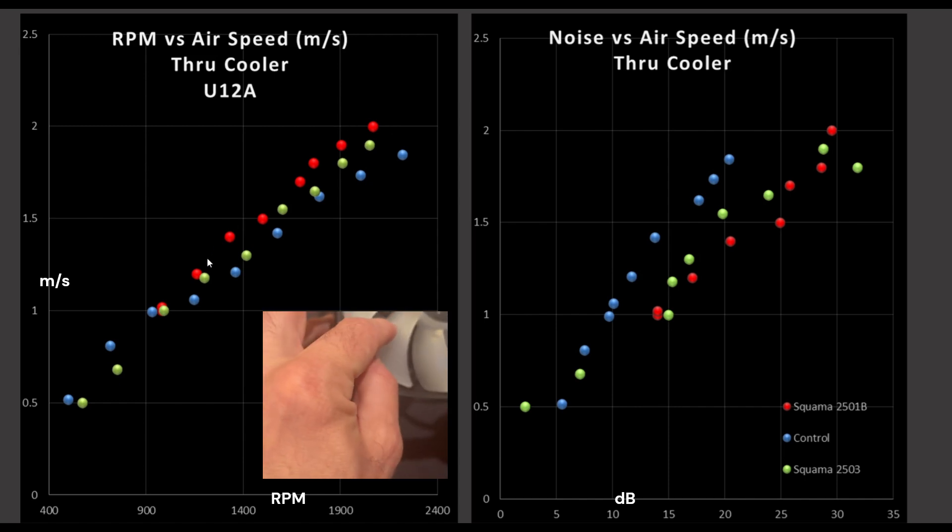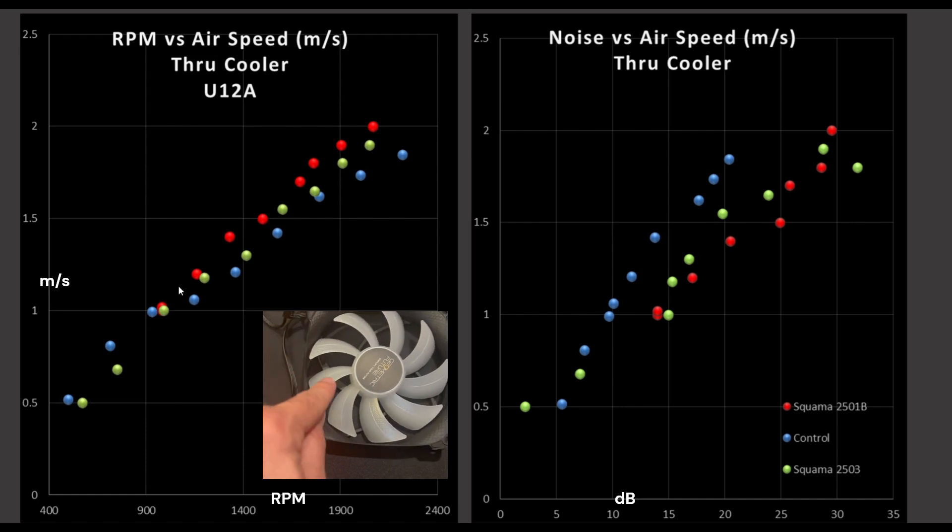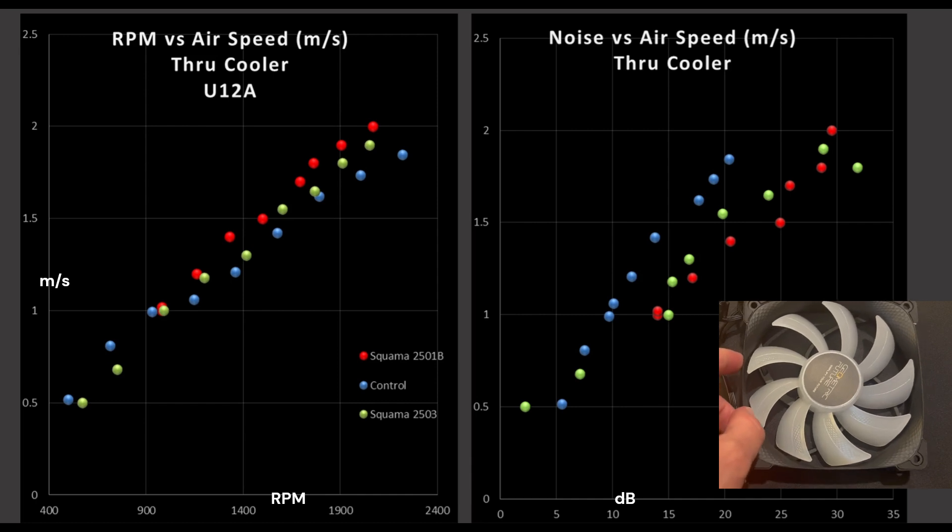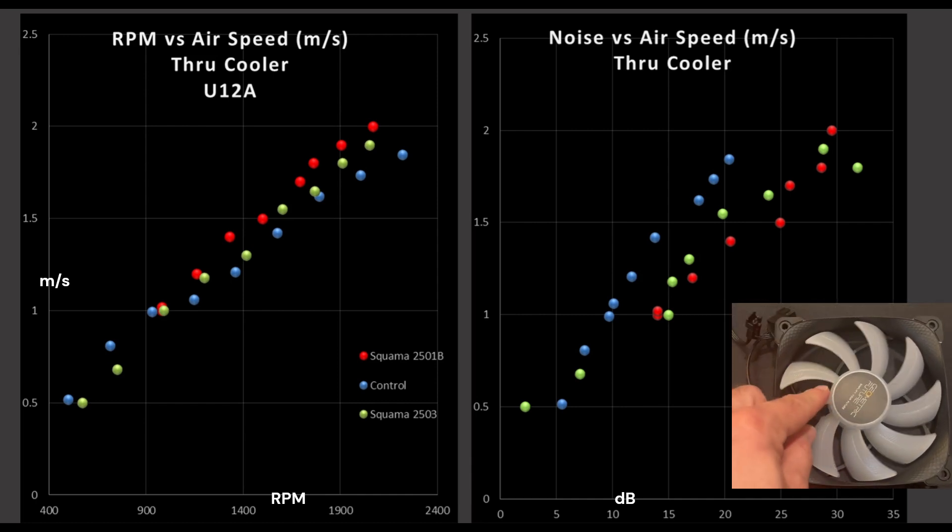We do see small performance differences here. So the control fan is sitting right here. And at mid and higher RPMs, so 20, 30, 40, let's say 50% RPM and higher, they are better than my control fan blend. So that is an impressive result. And we do see that the 2501, amazingly enough, is slightly outperforming the Squama 2503, the more expensive version. So kind of go figure there. I will like to note, I did like the appearance of the 2503. Just going to say that out loud, and the way the RGB looked on it. But appearance aside, let's move on to noise versus airspeed.